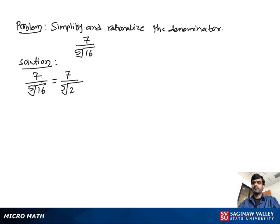To make the denominator a perfect 5th root, we need to have 5 factors of 2. As you see, we have 4 factors of 2, but we still need one more factor of 2. So what do we do?